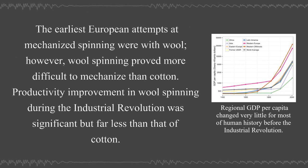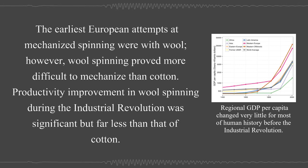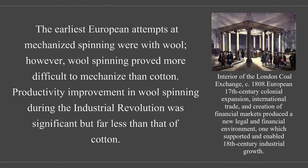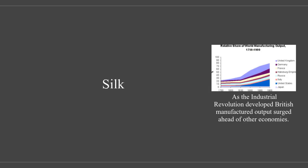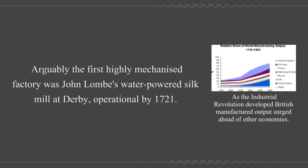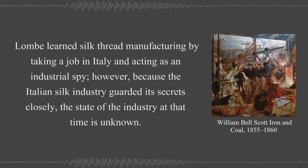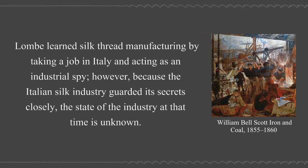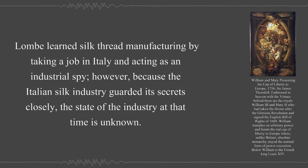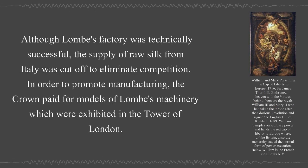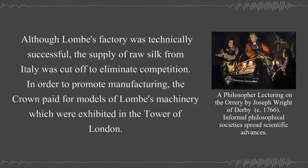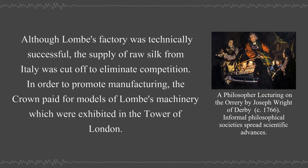The earliest European attempts at mechanized spinning were with wool; however, wool spinning proved more difficult to mechanize than cotton, and productivity improvement was significant but far less than that of cotton. Arguably, the first highly mechanized factory was John Lomb's water-powered silk mill at Derby, operational by 1721. Lomb learned silk thread manufacturing by taking a job in Italy and acting as an industrial spy. Although Lomb's factory was technically successful, the supply of raw silk from Italy was cut off to eliminate competition. In order to promote manufacturing, the crown paid for models of Lomb's machinery which were exhibited in the Tower of London.